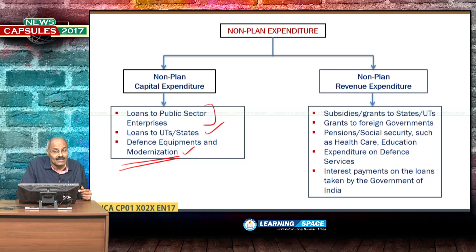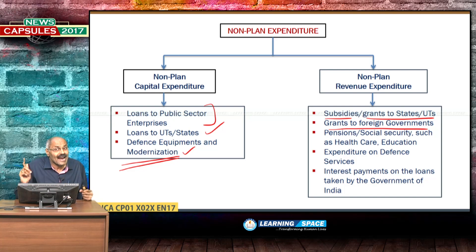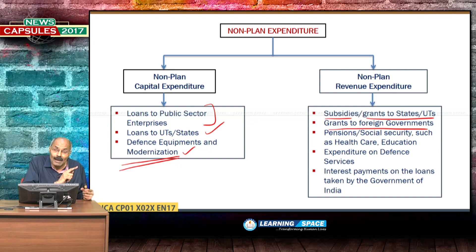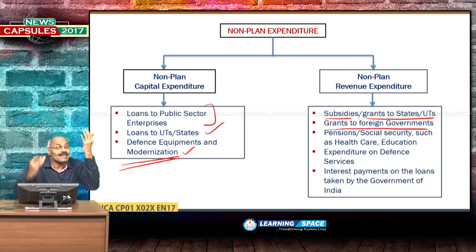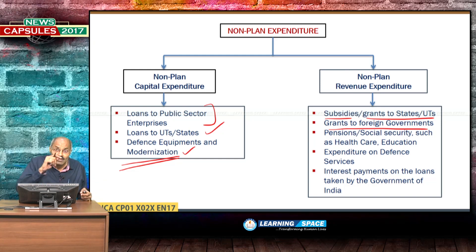Non-plan revenue expenditure includes subsidies, grants to foreign governments, and grants to states or UTs. There is an important difference between loan and grant — grant comes under revenue expenditure, while loan comes under capital expenditure. Grant is like a father-in-law giving money to a son-in-law; it will not be repaid. Pensions and social security also come under non-plan revenue expenditure.